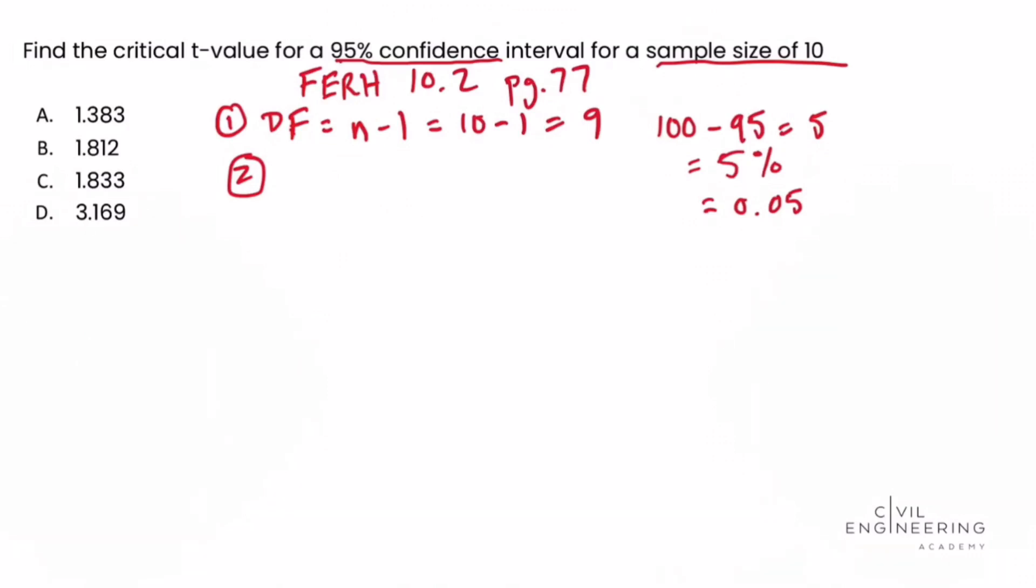So if we work our way across the table, we see the first column is 0.25, the second column is 0.20, the third column is 0.15, the fourth column is 0.10, and the fifth column is 0.05.